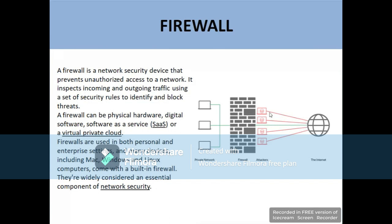The firewall will stop any unauthorized access to the private network, because any outsider should not be able to access your network. Basically, a firewall is just like a wall in a house — any person who is not authorized to enter cannot get in. The firewall is the first level of defense of your network.